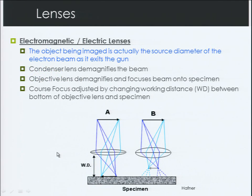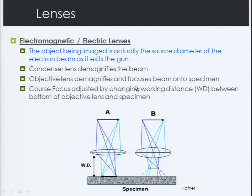The lenses in an SEM and FESEM are quite different — these are electromagnetic lenses. The object being imaged is not the sample but actually the electron beam as it leaves the gun. The first lens the beam travels through is a condenser lens, which widens the beam. Then an objective lens demagnifies or brings that beam back together and finally focuses it onto the specimen. Coarse focus is changing the working distance — the height of the sample — while fine focus is changing the current to the objective lens.